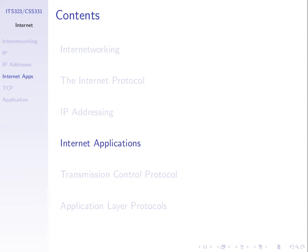BitTorrent is an application, or even a protocol, to support file download. You can download files by downloading from different servers, receiving different parts of the file. Another example: instant messaging.